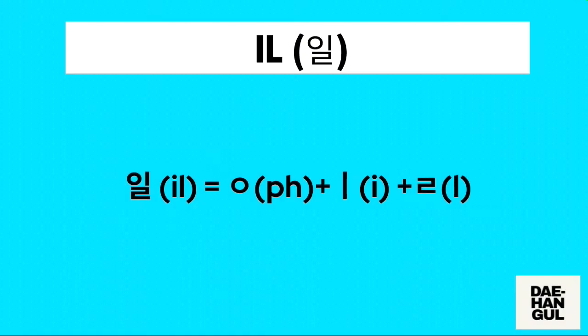How do we write 'il' in Hangul? This is composed of just three characters: the first character is an 'i' character, followed by an 'l' character, followed by a final character. And then we just need to combine to form the Hangul of the word 'il.'